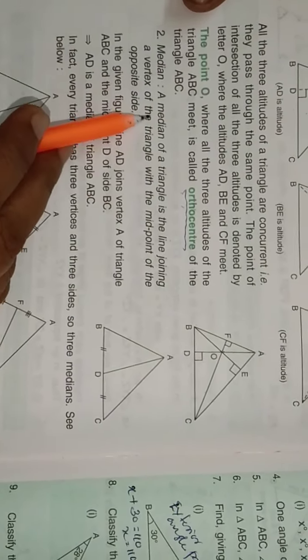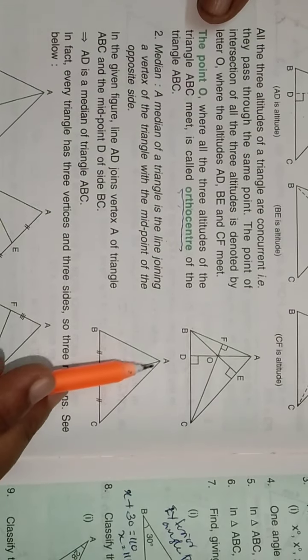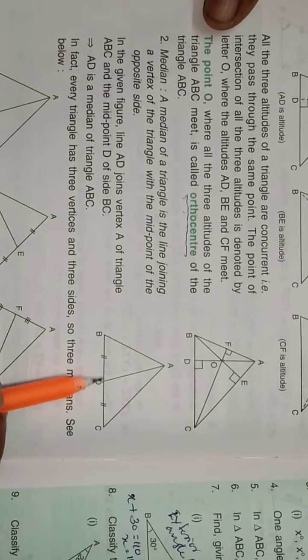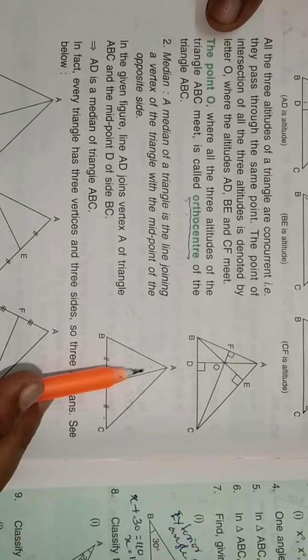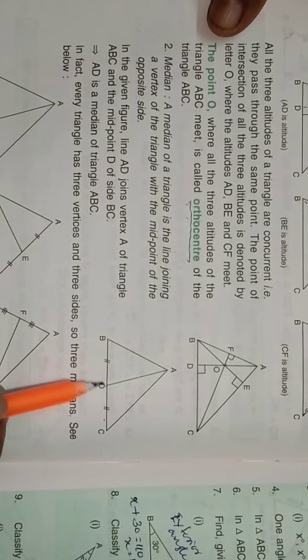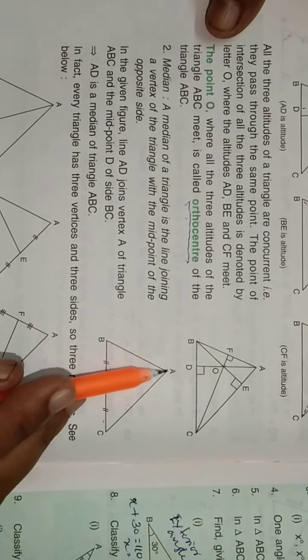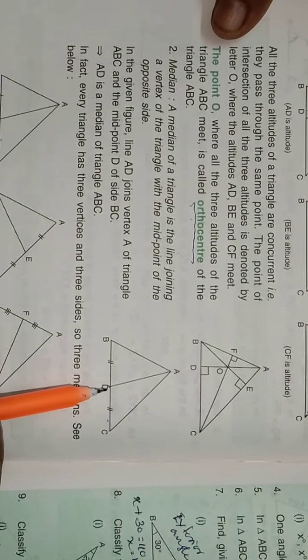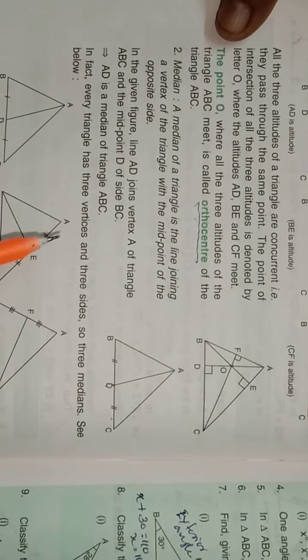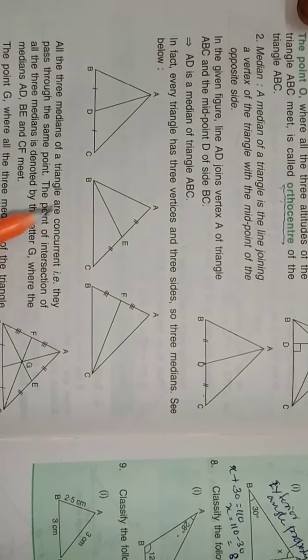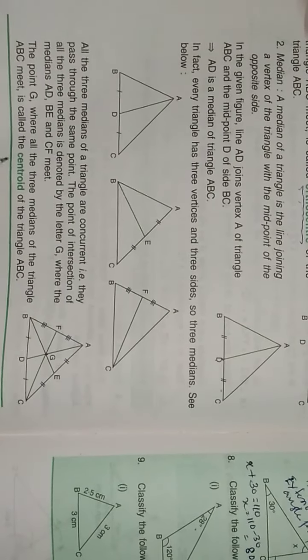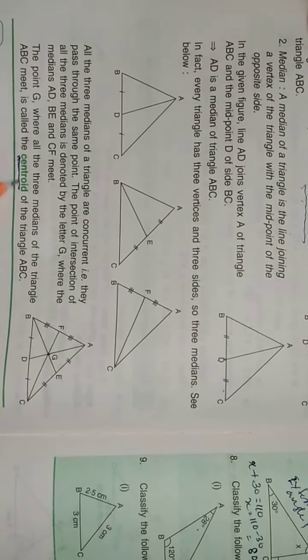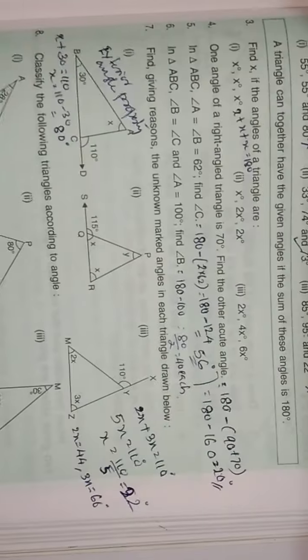The median is a line segment joining a vertex and the midpoint of the opposite side. For example, AD is the median if D is the midpoint of BC. When all three medians are drawn from the three vertices, they pass through one common point known as the centroid. Remember this name — it will be discussed in senior classes.